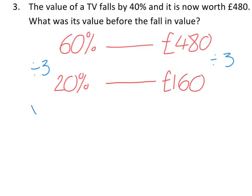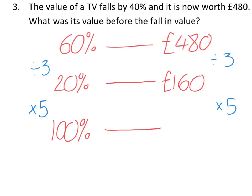If we now multiply both sides by 5, then 20% multiplied by 5 gives us 100% — the desired percentage and original value. We multiply 160 by 5: dropping the 0, 16 times 5 — 5 times 10 is 50 and 5 times 6 is 30, making 80 — then add the 0 back on to get 800 pounds. So £800 represents 100% and is the original value of the TV.